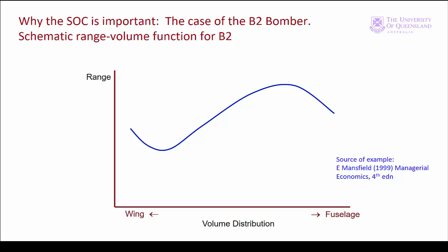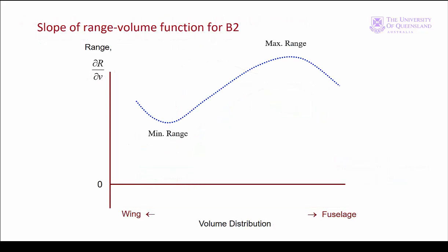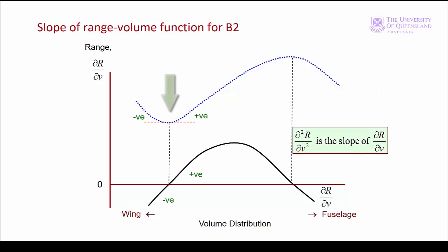In a simplified version of the range-volume function, there are two stationary points: a maximum range and a minimum range. For the interval around the minimum, the function is convex and the second derivative is positive. For the interval around the maximum, the function is concave and the second derivative is negative. We can see this more clearly by plotting the graph of the first derivative: at the minimum, the first derivative goes from negative to positive, and at the maximum point, it goes from positive to negative.